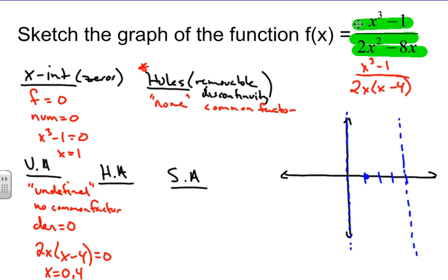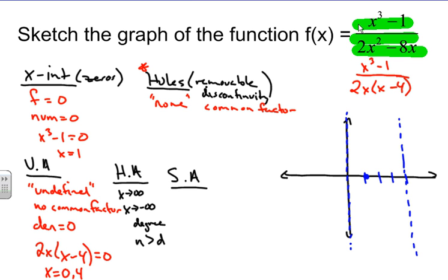For horizontal asymptotes, we look at the degrees of the numerator and denominator. We want to figure out what happens to our y-values as x goes to infinity or negative infinity. We notice that the degree of the numerator is greater than the degree of the denominator, so the function increases without bound — therefore there are no horizontal asymptotes.